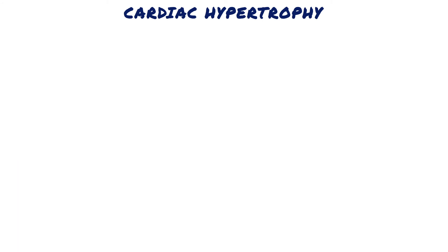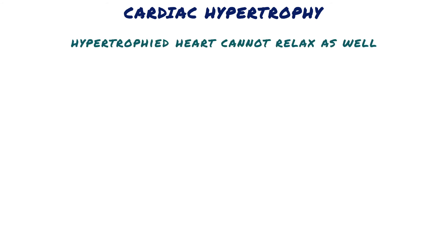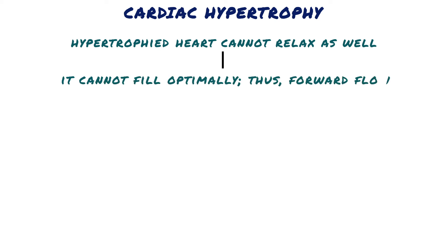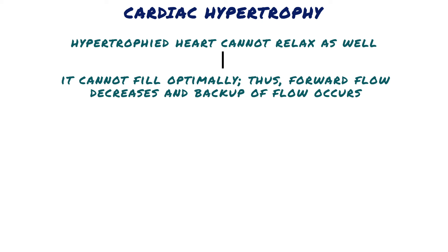Ventricular relaxation occurs during diastole, so since the hypertrophied heart cannot relax as well, cardiac hypertrophy causes diastolic dysfunction. If the heart cannot relax optimally, it cannot fill optimally — thus forward flow decreases and back pressure flow occurs. Hypertrophy of the left ventricle can eventually lead to left heart failure symptoms and signs, and right ventricular hypertrophy can lead to right heart failure symptoms and signs.